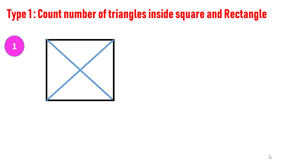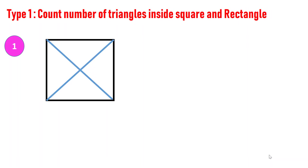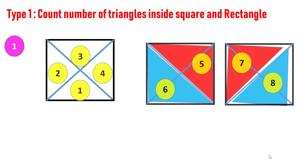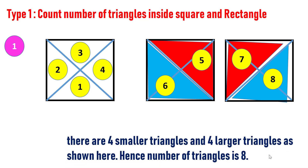Here in this figure, first count the number of triangles manually. Later, I will explain the trick to count the number of triangles. In this figure, there are four smaller triangles and four larger triangles as shown here. Hence, the number of triangles is eight.